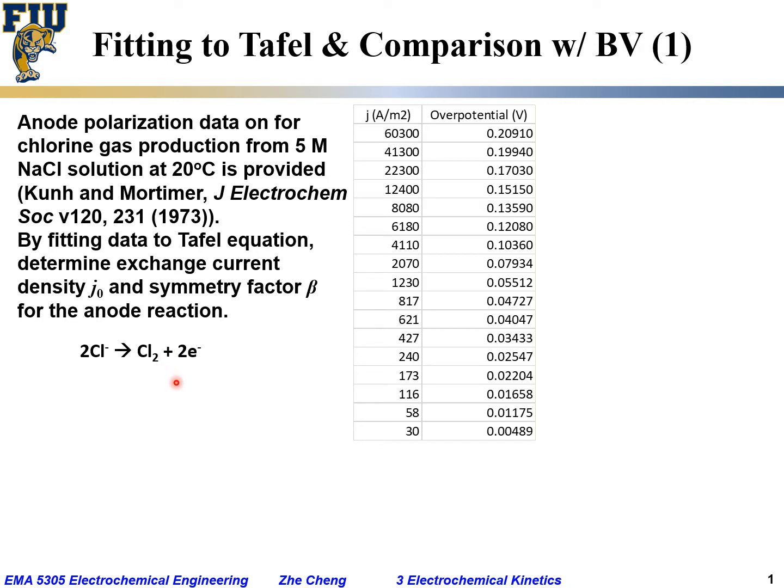This is the anode reaction. And as you can see, the number of electrons transferred N would be two for this reaction. If we write it this way, two chlorine ions to generate one chlorine molecule and releasing two electrons, we can say the number of electrons transferred for this half cell reaction as we have written is two.